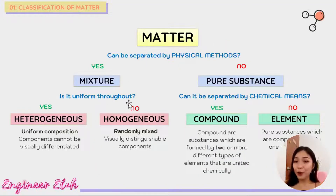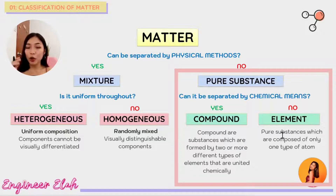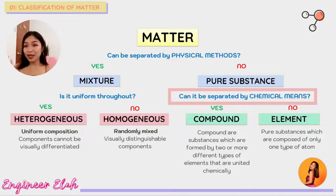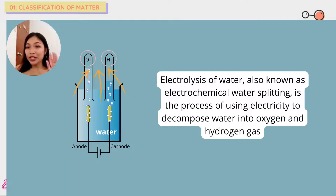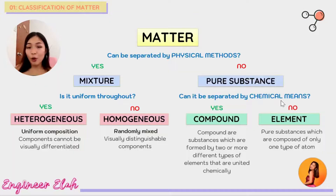That's it for mixtures. Let's now go to pure substances. Pure substances can be further classified into two types: compounds and elements. The question we need to ask once we know it's a pure substance is: can it be separated by chemical means or by chemical reactions?